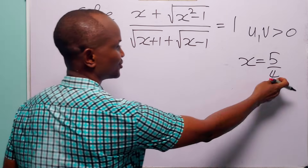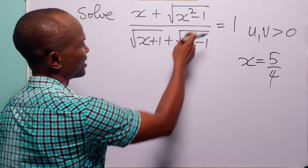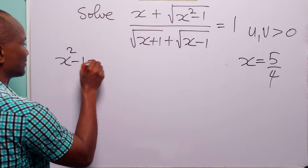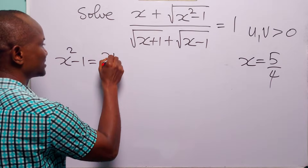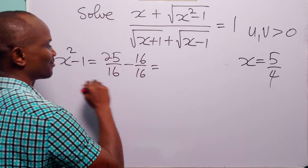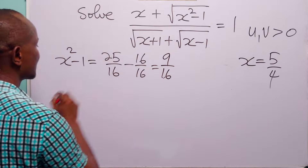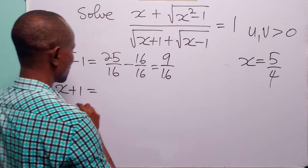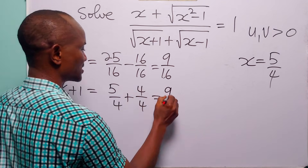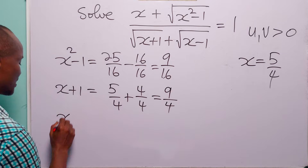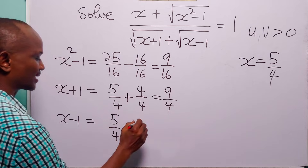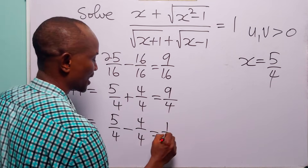Now let us check our answer by substituting x equals 5 over 4 into the original equation. We evaluate: x plus 1 equals 5 over 4 plus 4 over 4 equals 9 over 4; and x minus 1 equals 5 over 4 minus 4 over 4 equals 1 over 4.